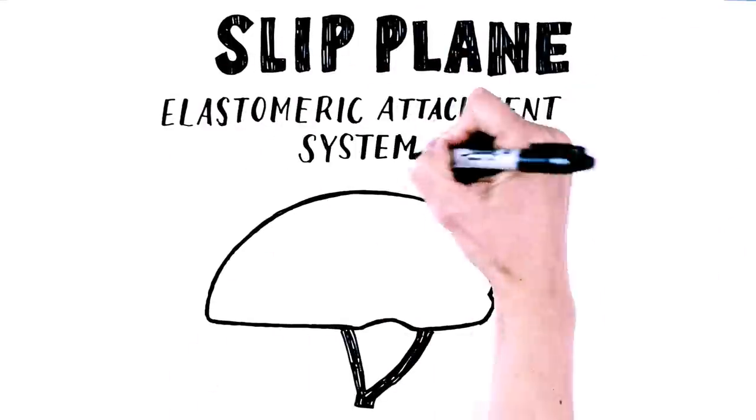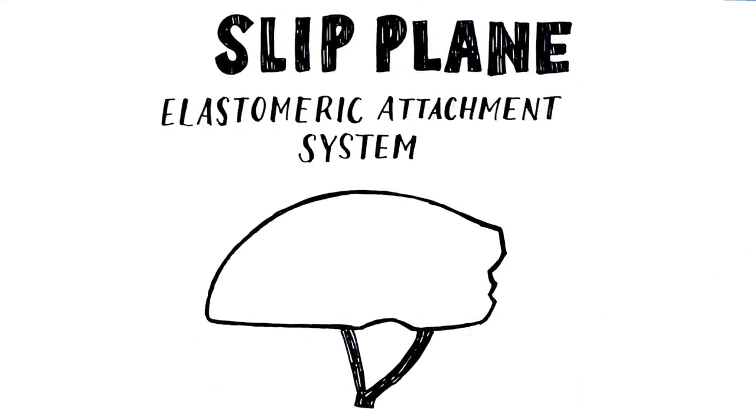A slip plane operates on a similar principle. An elastomeric attachment system stretches on impact, allowing the helmet liner to move.